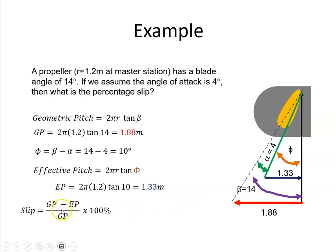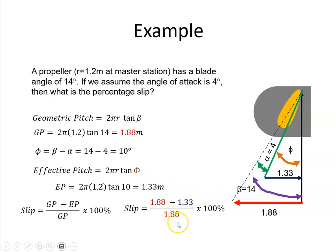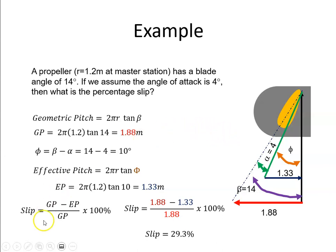To work out slip: it's the geometric pitch minus the effective pitch, divided by the geometric pitch, converted to a percentage. Plugging in those values: (1.88 − 1.33) ÷ 1.88, which gives 29.3 percent. So this propeller has a slip of 29.3 percent. That is propeller slip — I hope that is of some benefit.